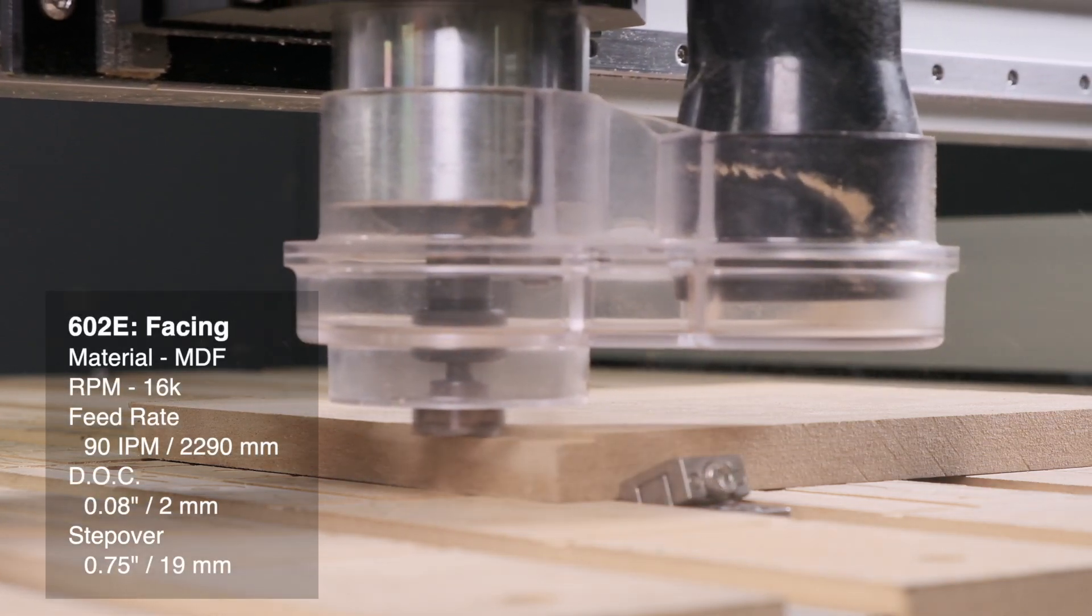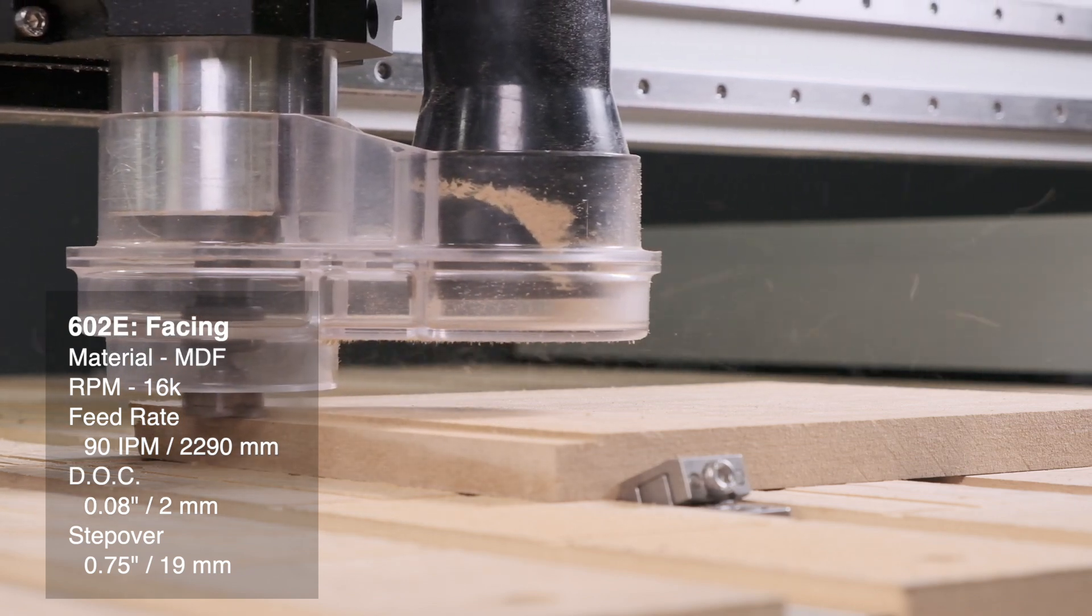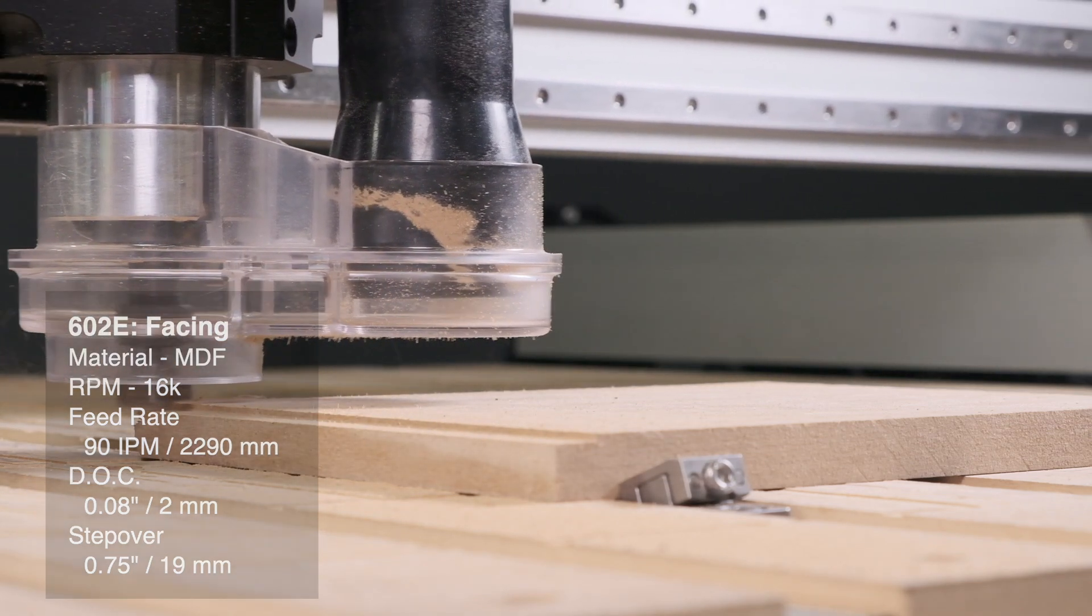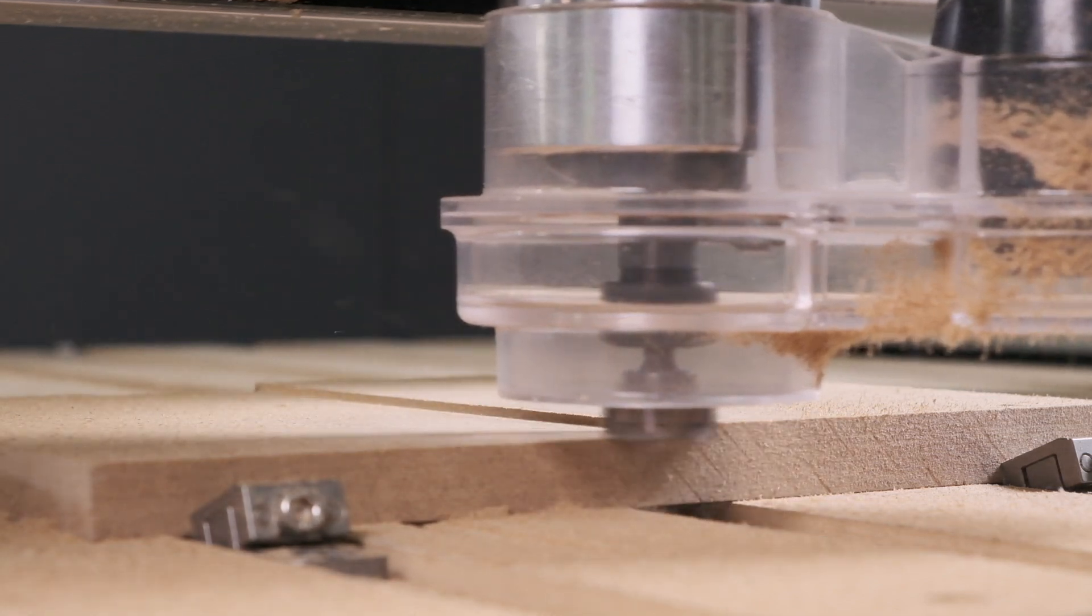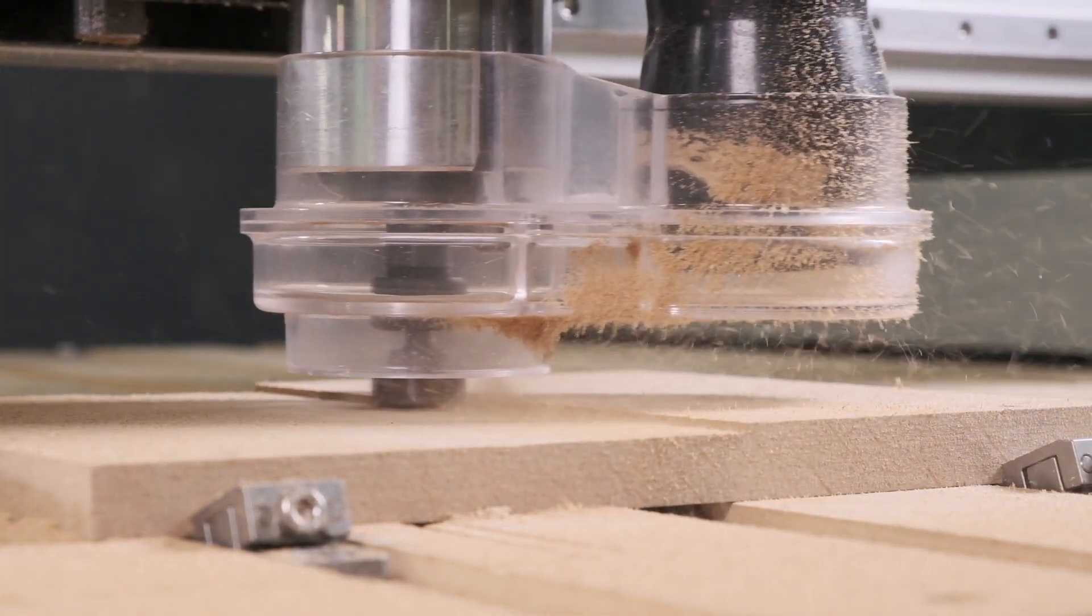Here on a Shapeoko Pro, I'm doing a 2mm depth of cut in MDF, which is much easier to cut than a dense hardwood. You'll have to do some experimentation with your material and machine to see what works best for you.